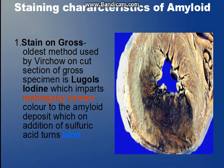Firstly, staining on the gross specimen. Whenever we get a gross specimen in which amyloidosis is suspected, we stain it with Lugol's iodine, which imparts a mahogany brown color to the amyloid deposit. On further addition of sulfuric acid, it turns blue in color. This was the test for the gross specimen.